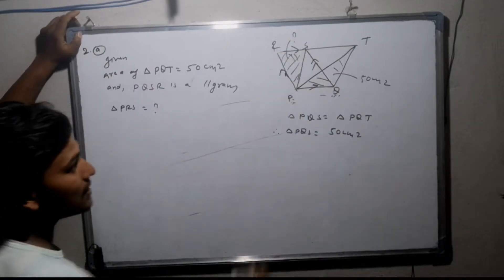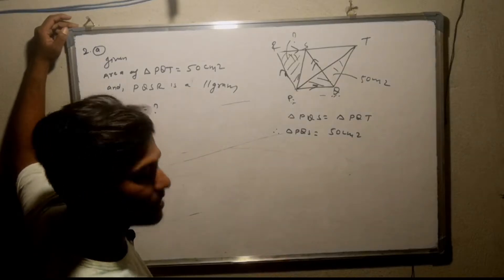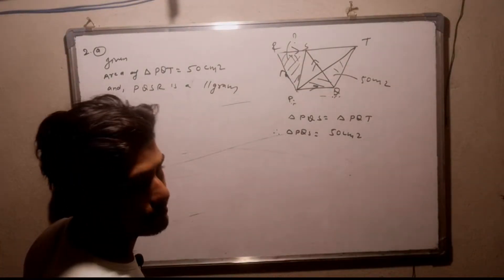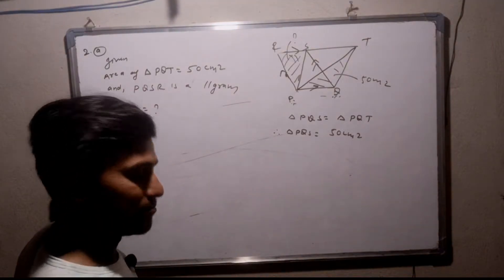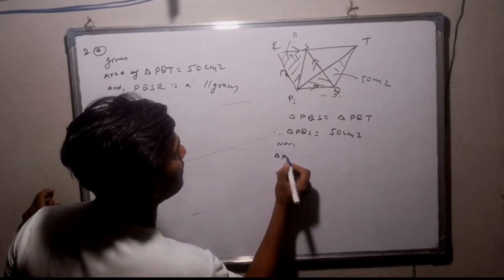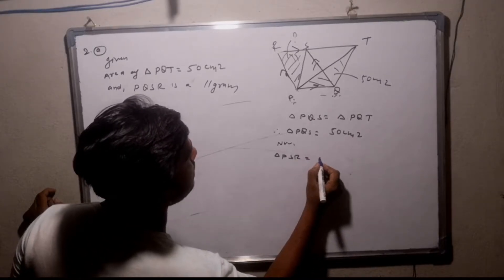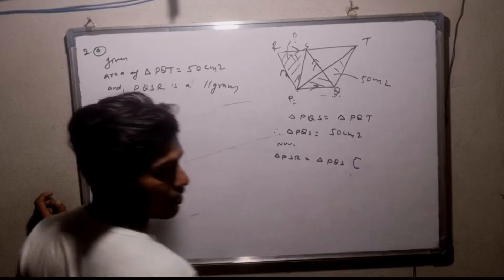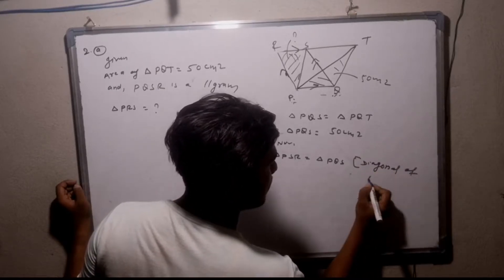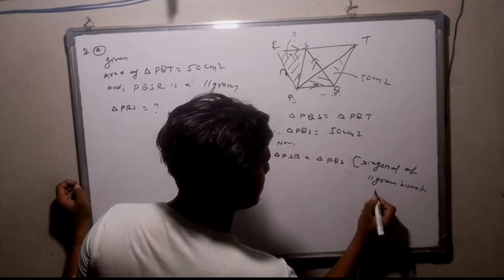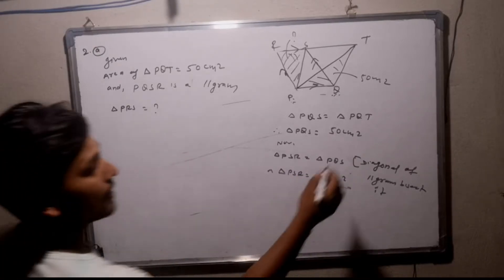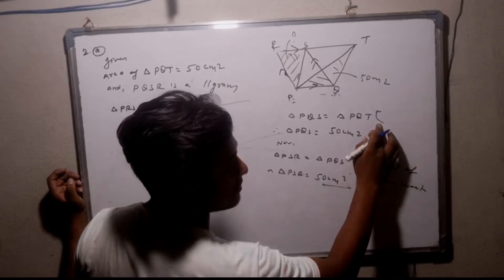PQT triangle and PQS triangle are standing on the same base between the same parallels. Area of triangle PQS is equal to area of triangle PQT, both standing on the same base. Area of triangle PQS is equal to 50 cm². The question is PQRS is a parallelogram. Diagonal bisects the parallelogram. Area of triangle PSR is equal to area of triangle PQS. Triangle PSR equals PQS equals 50 cm².